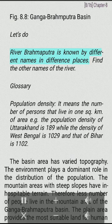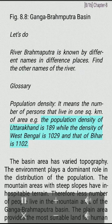River Brahmaputra is known by different names in different places — find the other names of the river. Population density means the number of persons that live in one square kilometre of area. For example, the population density of Uttarakhand is 189, while the density of West Bengal is 1029 and that of Bihar is 1102.